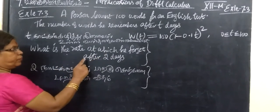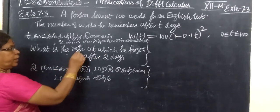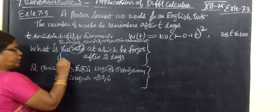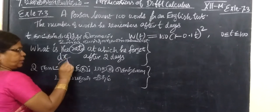What is the rate at which he forgot after two days? Rate, as we said, dx by dt, dy by dt.